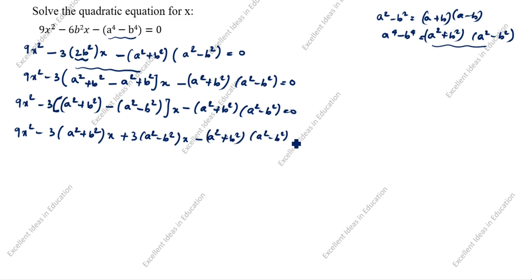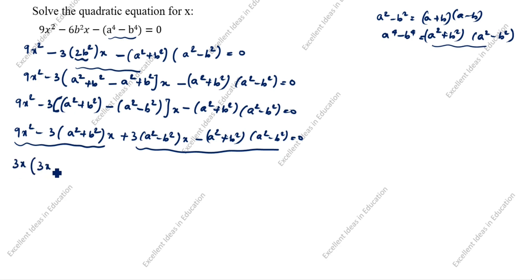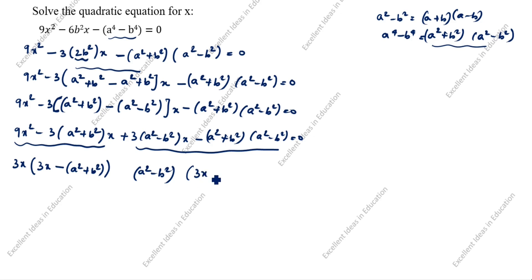Now we take the first two terms together and the last two as another term. Which factor is common in the first pair? 3x. So take 3x outside, leaving (a²+b²) inside the bracket. In the second pair, which is common? (a²−b²). Take (a²−b²) outside. You see (a²+b²) appears in both groups. So factor out (a²+b²): gives (a²+b²)[3x minus (a²−b²)] — here minus into minus gives plus, and plus into minus gives minus — equal to 0.